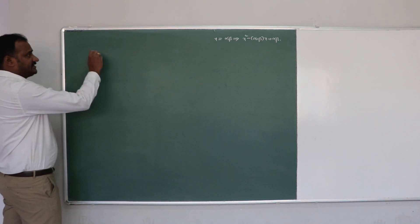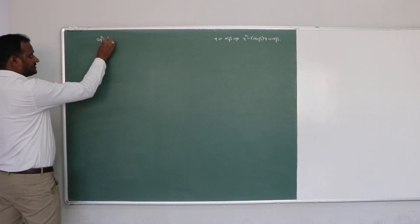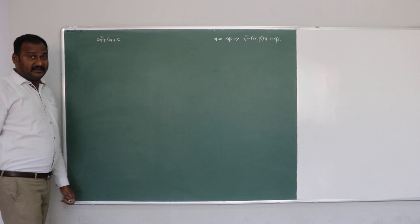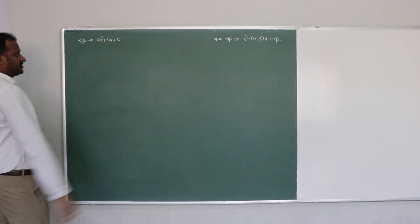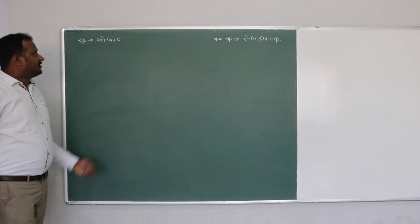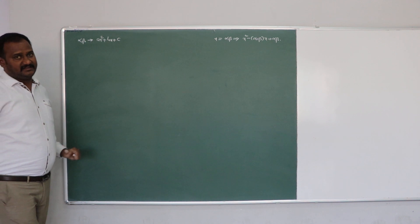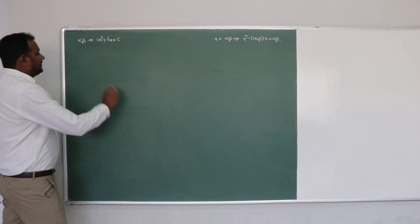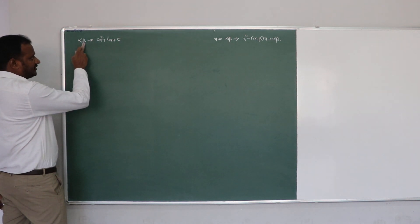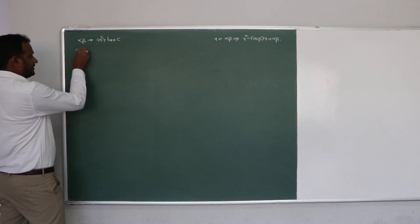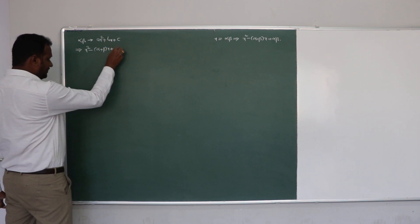For example, if I consider a polynomial ax squared plus bx plus c, whose zeros are alpha and beta, then what is the relationship between alpha and beta and a, b, c? That is what we are going to do. Since alpha and beta are zeros of the polynomial, the polynomial is going to be a times x squared minus (alpha plus beta) into x plus alpha times beta.